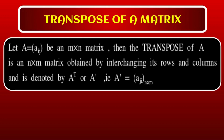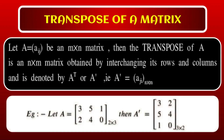So in the transpose, rows and columns are interchanged — rows become columns and columns become rows. For example, let A = [[3, 5, 1], [2, 4, 0]], which is a 2×3 matrix.